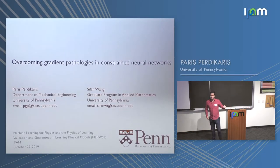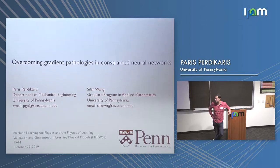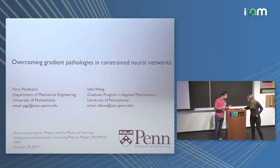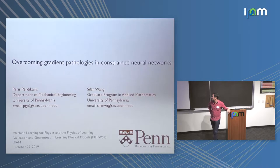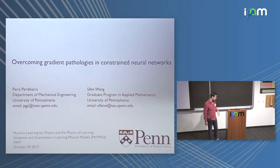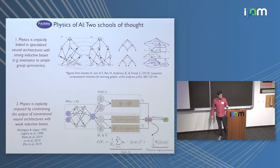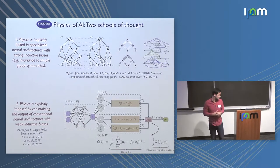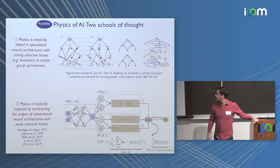Thanks very much to Steve and the rest of the organizers for the invitation. Today I'll present some recent work on constraining neural networks — a topic of interest for many of us, whether it's constraining a neural network to return predictions satisfying conservation laws or any other constraints. This project is part of a DARPA program named the Physics of Artificial Intelligence, where the main concept is to think of ways of introducing physics in deep learning and constraining deep learning algorithms to respect physics.